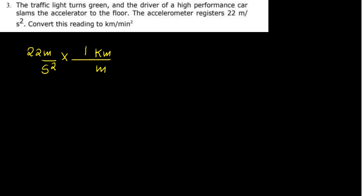We have a driver moving at 22 meters per second squared, and we want to convert this to kilometers per minute squared. The first thing is to convert meters to kilometers. We've got a meter on top, we'll put a meter down, and then a kilometer on top. We know that in one kilometer we've got 1000 meters, so the meter and the meter cancel.